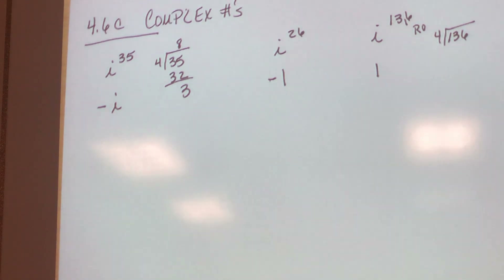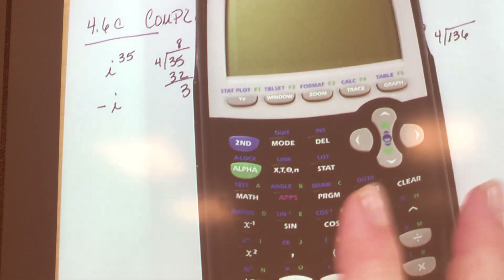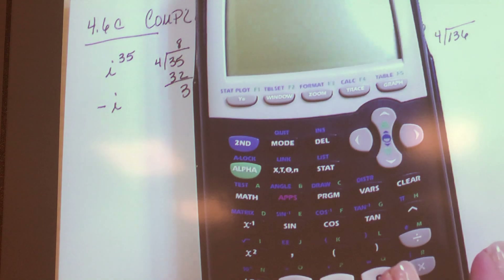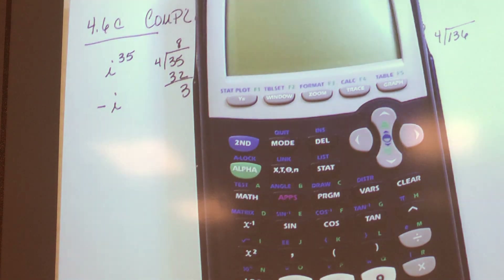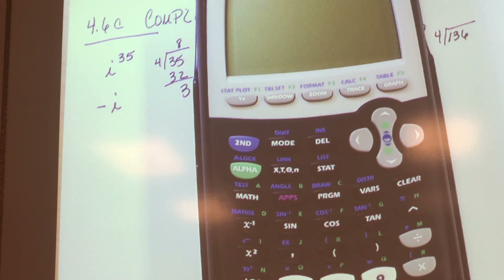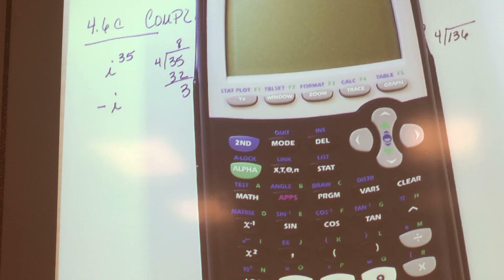Now I'm going to show you why I'm not going to let you use a calculator. Everything that we've done thus far you could do on your calculator. I'm only showing you this because you could use your calculator to check your worksheet. But you will not have a calculator on the test — so if you use your calculator to do your worksheet, you're going to flunk the test.